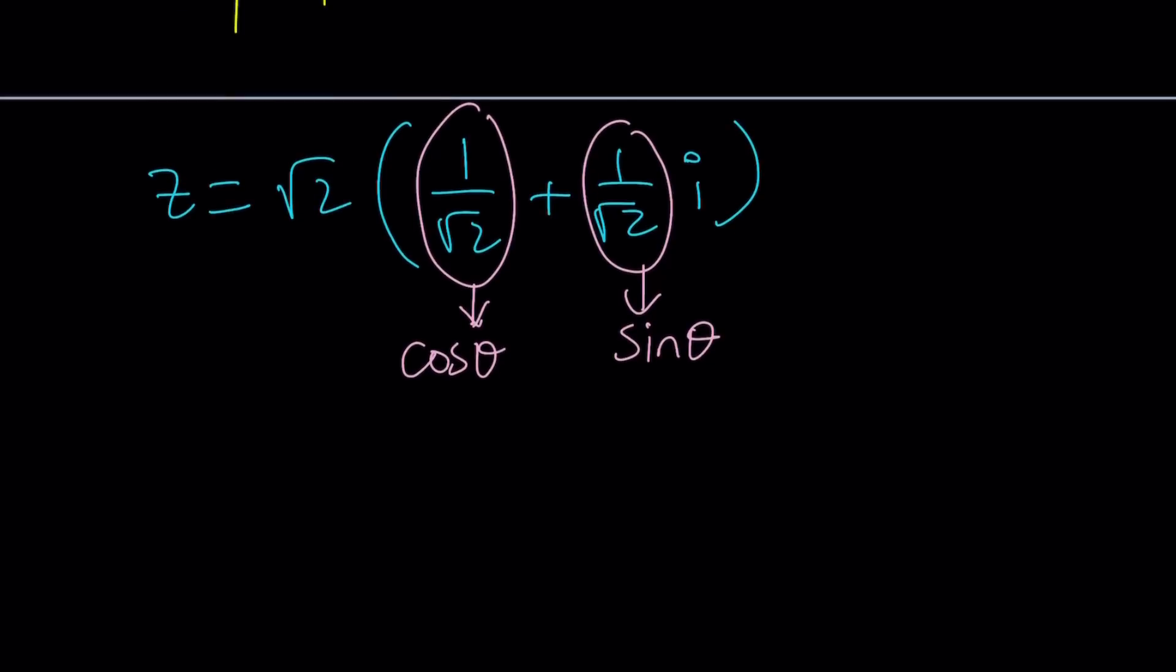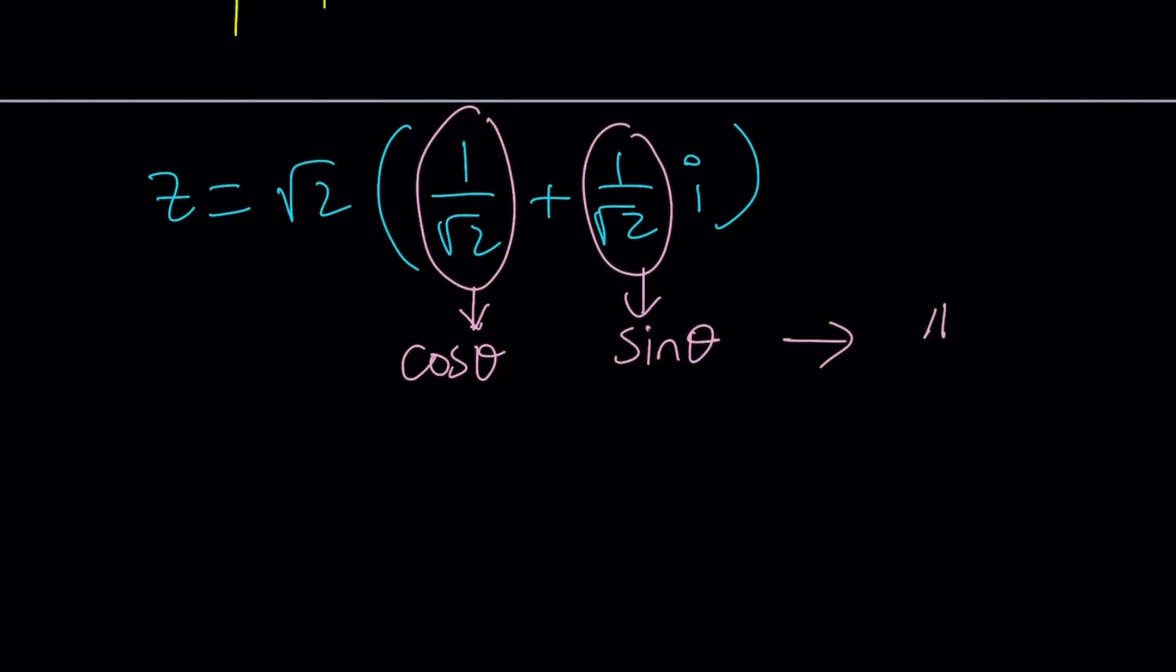The smallest angle that satisfies this is going to be π over 4. I say smallest because we can make it bigger. But first I'm going to look at the principal branch, and then we're going to generalize it.